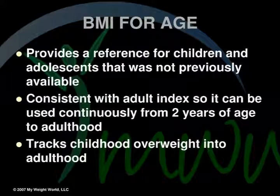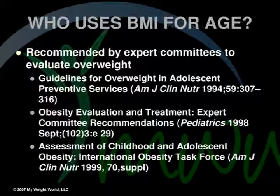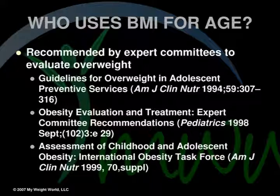BMI for age provides a reference for children and adolescents not previously available. It is consistent with the adult index, so it can be used continuously from two years of age to adulthood, and it tracks childhood overweight into adulthood. It is recommended by multiple expert committees and has been published in the American Journal of Clinical Nutrition and the Journal of Pediatrics. Overall, the age-adjusted BMI is more accurate for a child than the standard number.